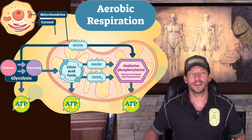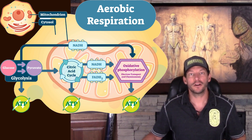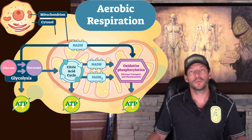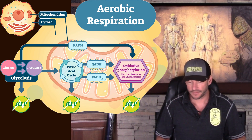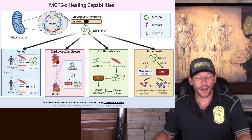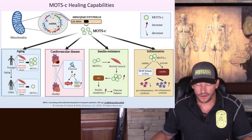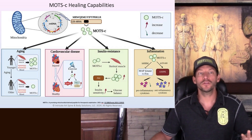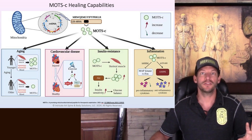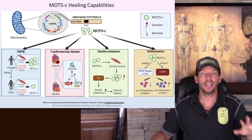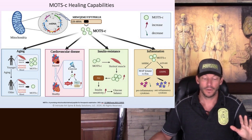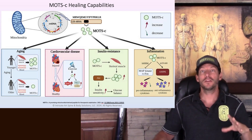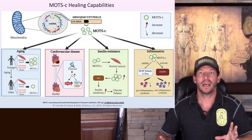If your mitochondria are functioning better and your body is producing more ATP, it has more energy to metabolize and break down food, helping improve your metabolism and metabolic function. Looking at a diagram of MOTC's healing capabilities: MOTC decreases inflammation, improves insulin resistance, and helps with cardiovascular disease and cardiac-related injuries. One of the most common side effects of COVID vaccines in young people is myocarditis. These peptides have all been shown to be helpful with COVID symptoms and vaccine injury-related symptoms.